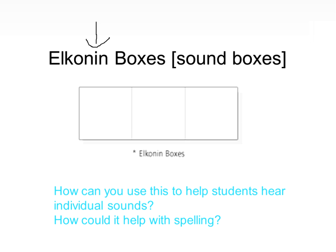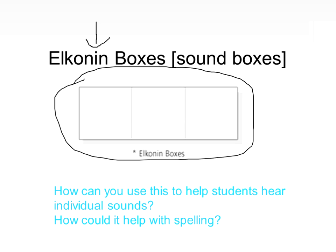An activity to foster sound segmenting is Elkonin boxes, also called 'say it and move it.' You create boxes and work on words with three phonemes — like 'cat.' Students stretch the word out and move a penny into each box for each sound. It's concrete and multisensory, and can also help with spelling because you can ask them to write each sound in the box. For example, with 'sheep' you ask what sounds they hear at the beginning, middle, and end — it doesn't have to be a one-to-one print-to-sound match.